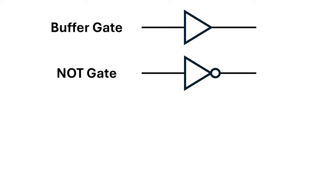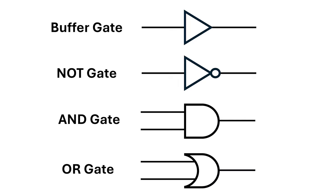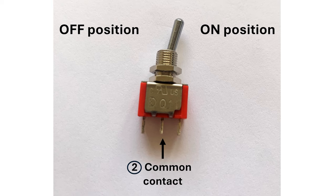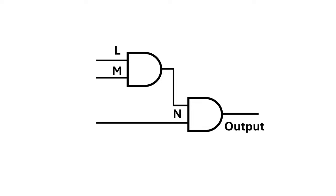In the last video we looked at the buffer, the NOT gate, the AND gate and the OR gate. We used physical switches to implement these which require my hand to physically move the switch. But what if I want to feed the output of one gate into the input of another gate?